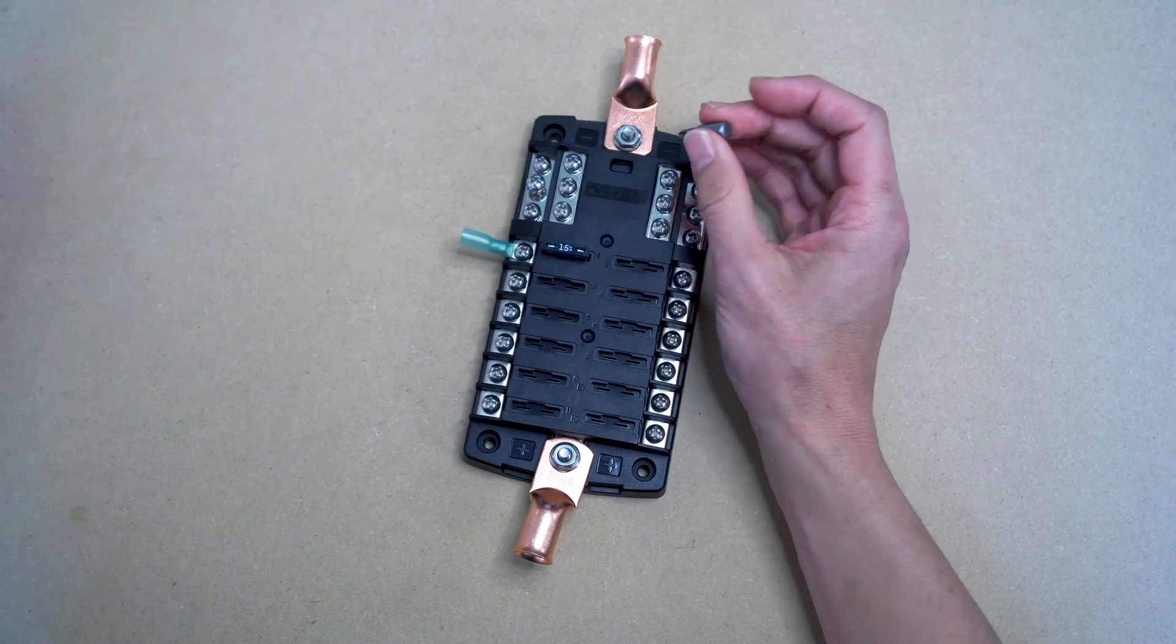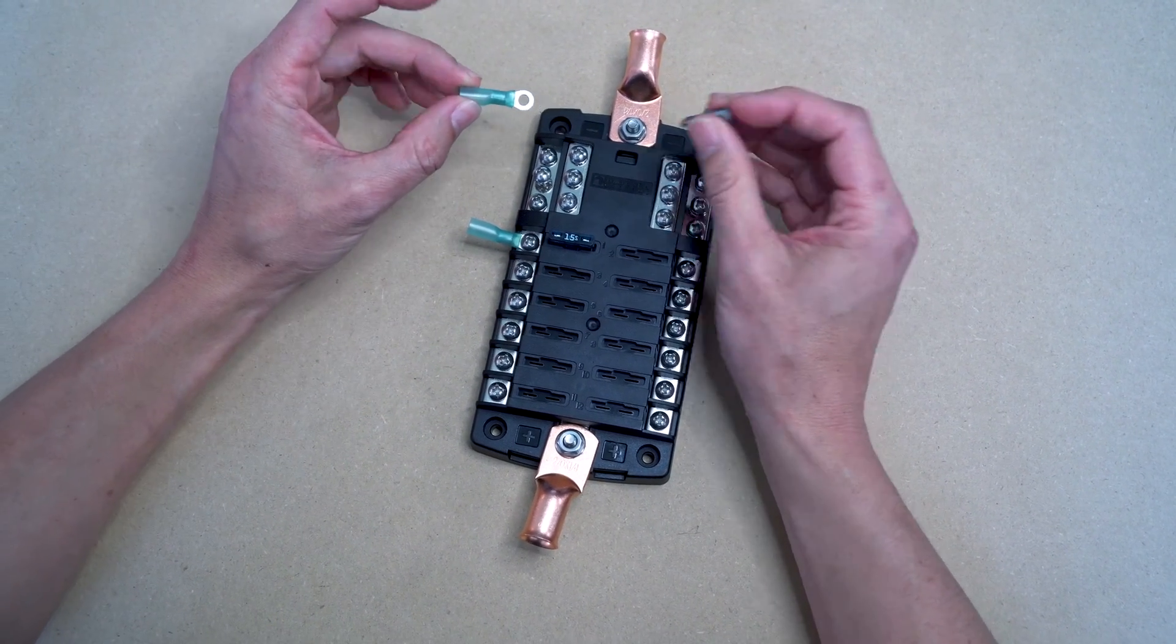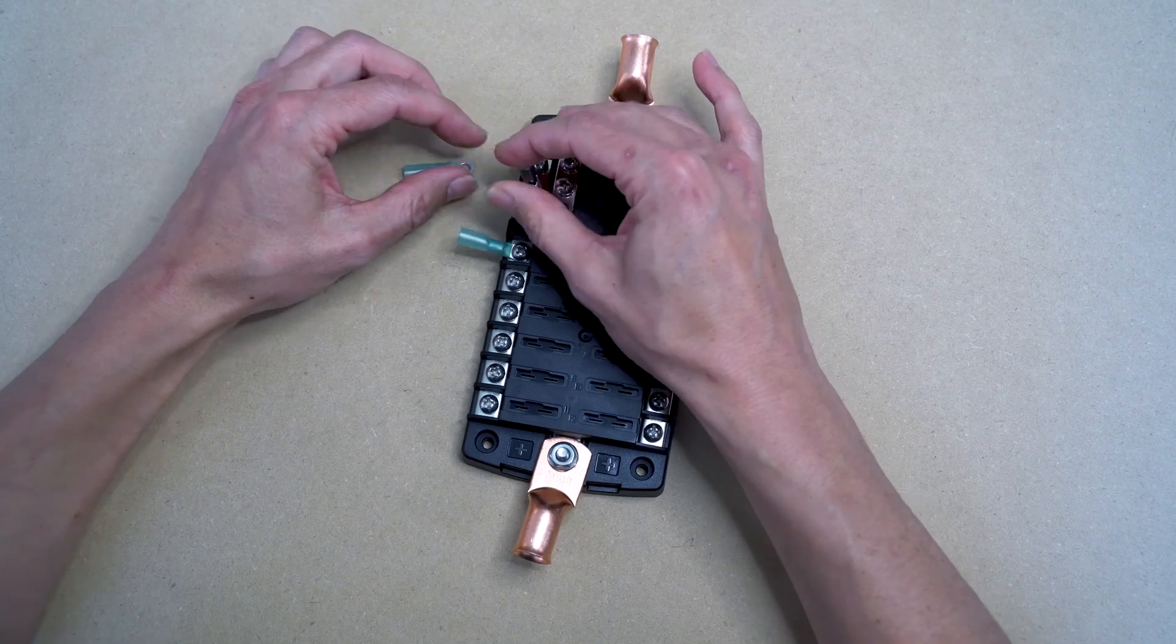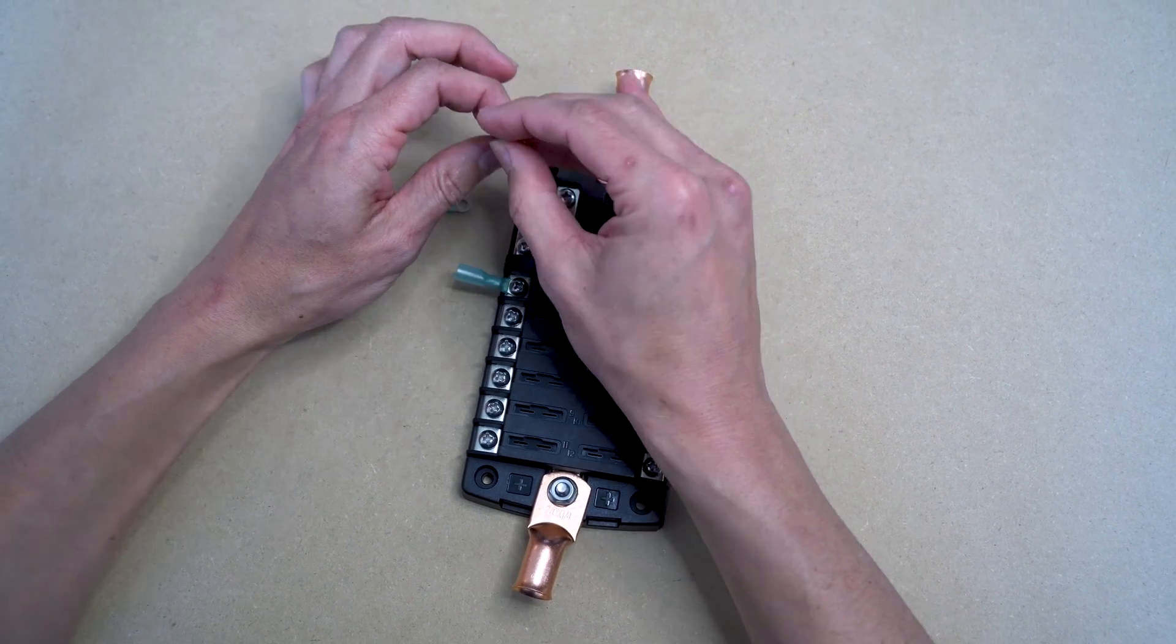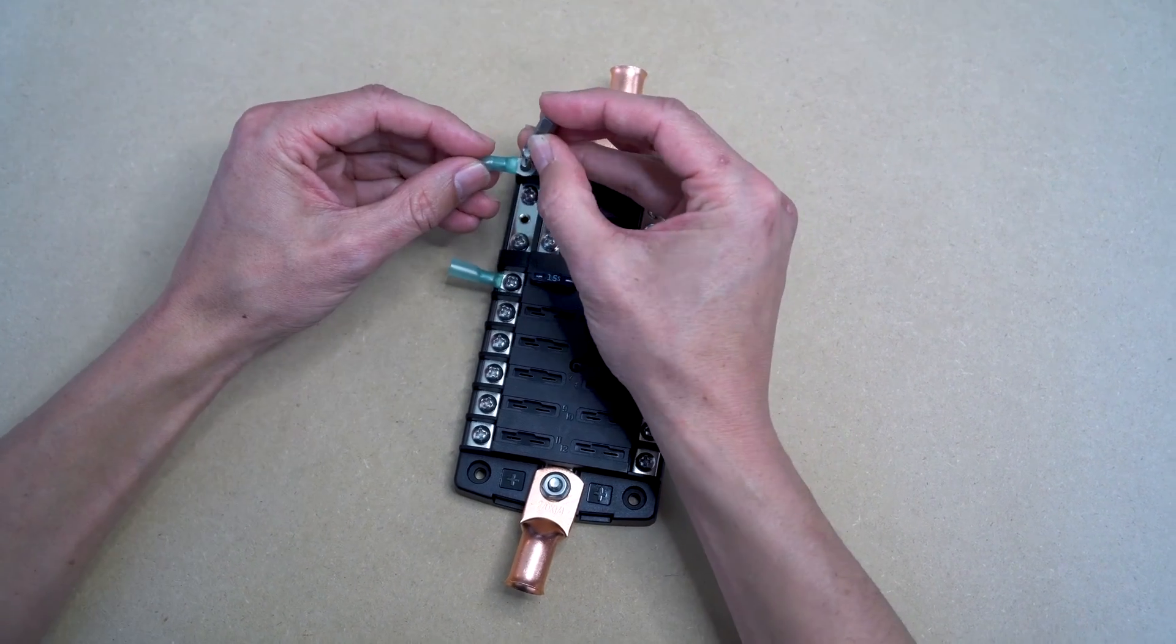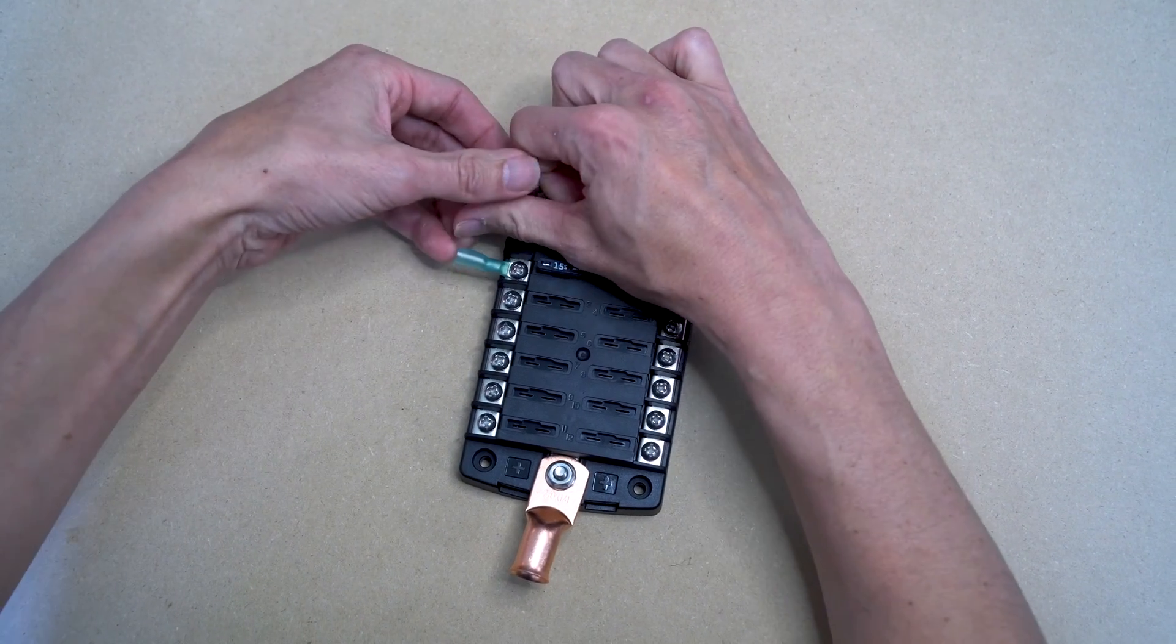And once fixed, we're going to do the same with the black wire. You want to crimp this ring connector onto the black wire and pick one of the negative screws, remove the screw, fit it over the ring connector, and put back into place.